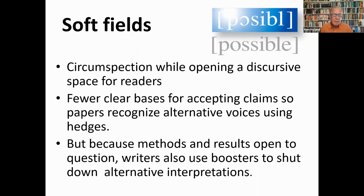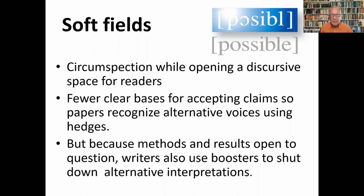One reason these are far more common in the soft fields is that there's less control of variables, more diversity of research outcomes, and fewer clear bases for accepting claims than in the sciences. So writers can't report research with the same confidence of shared assumptions — papers rely far more on recognising alternative voices, and arguments must be expressed more cautiously using more hedges. But because methods and results are also more open to question, writers use more boosters in some circumstances to establish the significance of their work against alternative interpretations, using forms like 'definitely', 'prove', and 'establish' to restrict alternative voices.